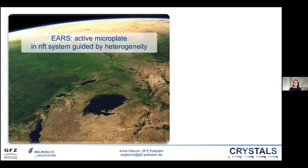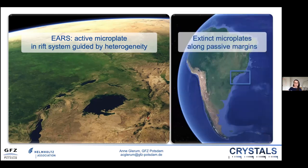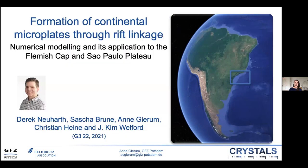Now that we've seen how an active continental microplate can rotate in a system guided by strength heterogeneities, I'd like to turn attention to ancient or remnant microplates found in passive margins, such as the Sao Paulo Plateau in the South Atlantic. This is work by Derek Neuhart, who just last month published this as part of his PhD. We wanted to use numerical modeling to provide the missing link between active microplates and the remnants found in the geological record, modeling their entire evolution from rift inception to segment overlap, vertical axis rotation, and then continental breakup.